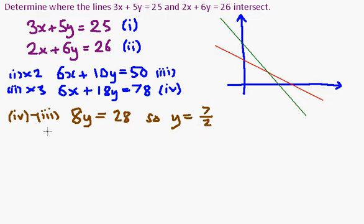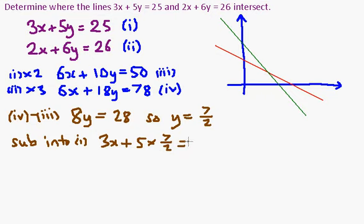Now, once I've got y, I can substitute y into one of my original two equations, and I'm going to choose the first one. It's nice and simple. So I've got 3x, so I'm looking at my original equation here, number (i): 3x + 5 times y, which is now 7 halves, is equal to 25. And I need to work out what the x is.